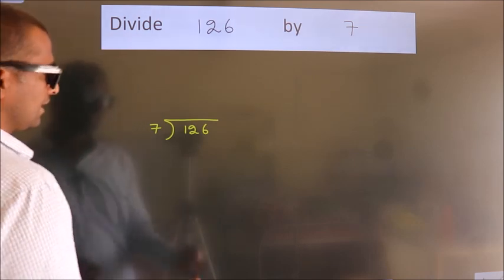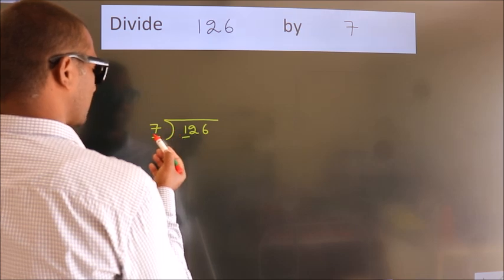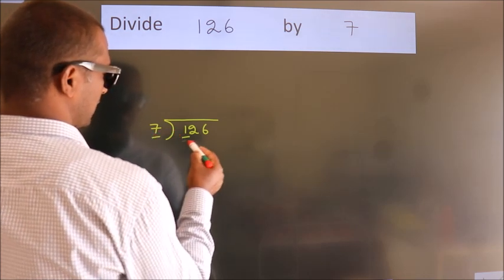Next. Here we have 1, here 7. 1 smaller than 7. So we should take 2 numbers, 12.